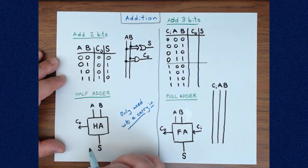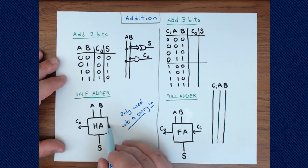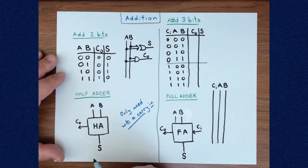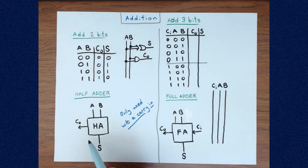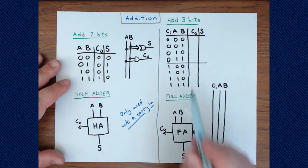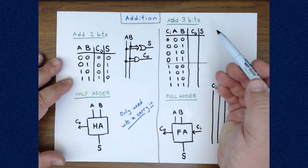The half adder is only good for two bits. If we wanted to cover all the remaining bits in 8, 16, or 128-bit adders, then we need to deal with adding three bits at a time — two data bits and an incoming carry. So let's figure that out.